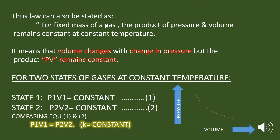For two states of a gas at a constant temperature, let the volume of a gas be V1 at a pressure P1, then P1V1 is equal to a constant. If the pressure changes to P2, then the volume will change to V2, such that the product will remain constant. Comparing these two equations, we can write P1V1 is equal to P2V2.